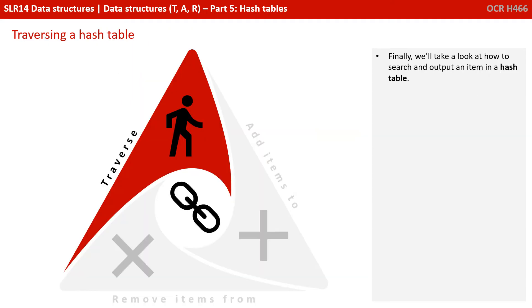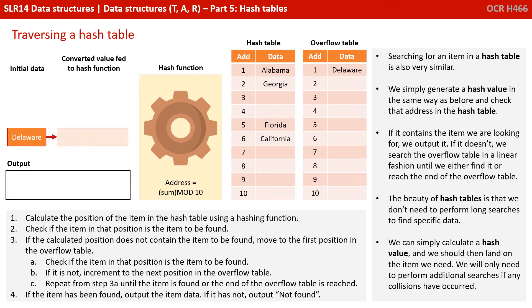Finally, we'll take a look at how to search and output an item in a hash table. Searching for an item is also very similar — we generate a hash value in the same way as before and check that address in the hash table. If it contains the item we're looking for, we output it. If it doesn't, we search the overflow table in a linear fashion until we find it or reach the end. The beauty of a hash table is that we don't need to perform long searches to find specific data — we simply calculate a hash value and should land on the item we need. We'll only need to perform additional searches if collisions have occurred.